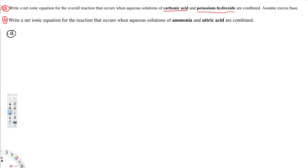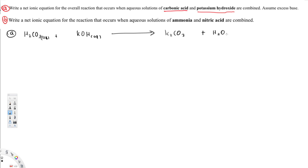To do this problem we have to write a balanced equation. We have carbonic acid, H₂CO₃ aqueous, and then potassium hydroxide, KOH aqueous. When we combine these two together we will get K₂CO₃ aqueous and also water, H₂O liquid.